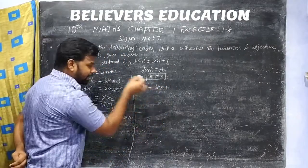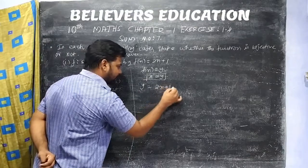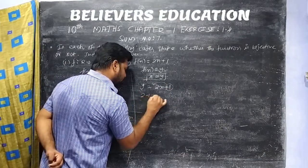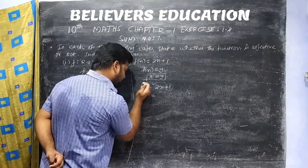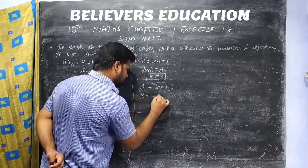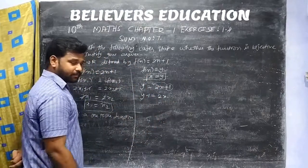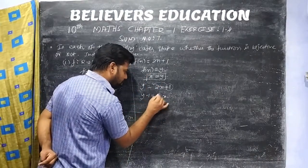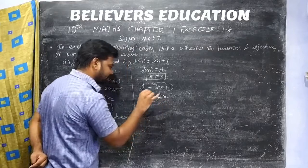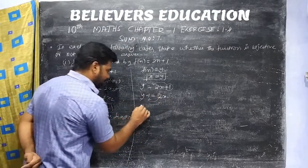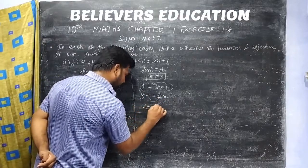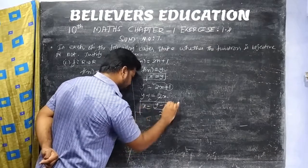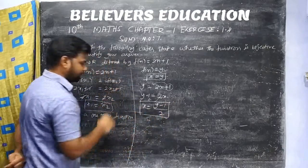We find x in terms of y. y equals 2x plus 1. Rearranging: y minus 1 equals 2x. Dividing both sides by 2, x is equal to y minus 1 divided by 2.